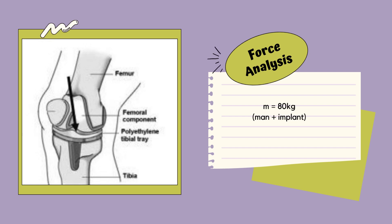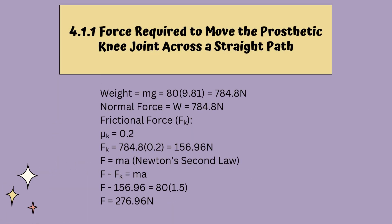Moving on to the force analysis. The diagram shown is the knee prosthesis implanted into a man. The implant and the man together weigh 80 kilograms. To calculate the force required to move the prosthetic knee joint across a straight path: the weight equals mass times gravitational acceleration, giving 784.8 Newtons. The normal force equals the weight. The frictional force, assuming a coefficient of friction of 0.2, is 156.96 Newtons. Using Newton's second law, F equals MA, the force required to move the prosthetic knee joint is 276.96 Newtons.